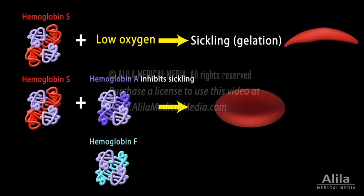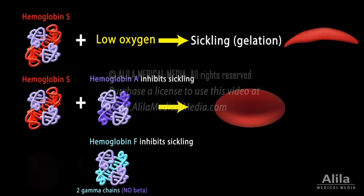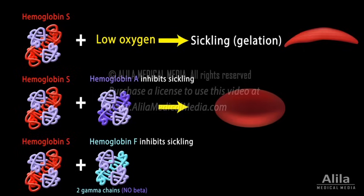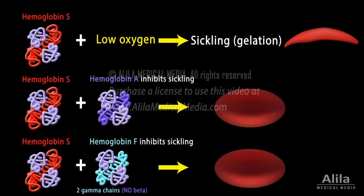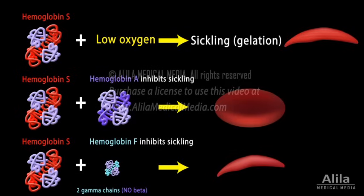Fetal hemoglobin F, which has 2 gamma chains in place of 2 beta chains, also suppresses sickling. Infants born with the condition seem to benefit from high levels of fetal hemoglobin in the first few months of life. They do not develop symptoms until the age of 6 months or so, when fetal hemoglobin levels drop.